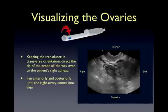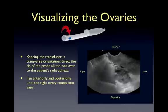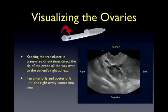After completing your view of the uterus, keep the indicator to the patient's right and direct the tip of the probe towards the patient's right adnexa. Fan the probe anteriorly and posteriorly until the right ovary comes into view. It will be hypoechoic and well-circumscribed with anechoic round follicles within it. It has often been referred to as having the appearance of a chocolate chip cookie.